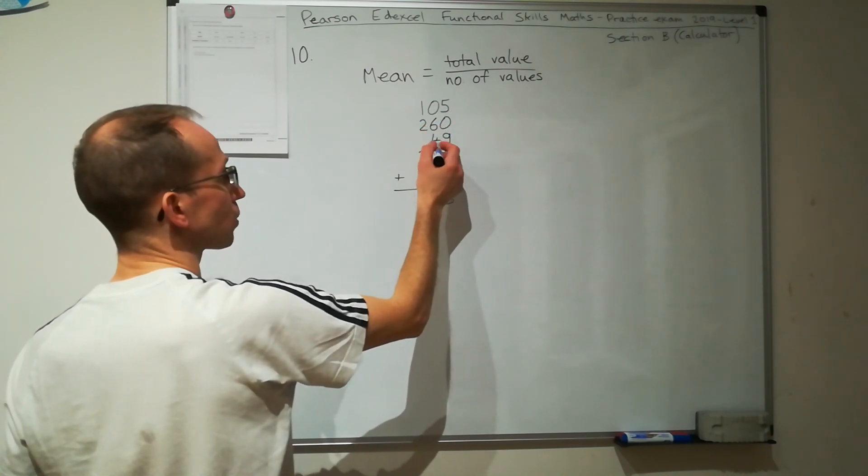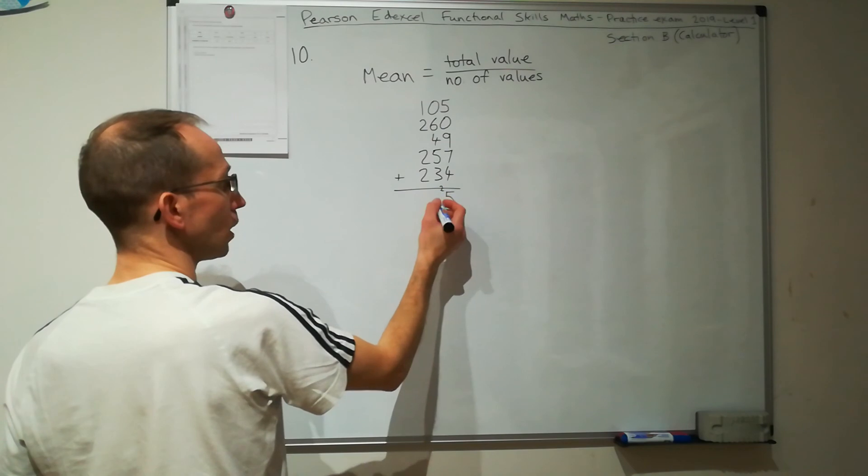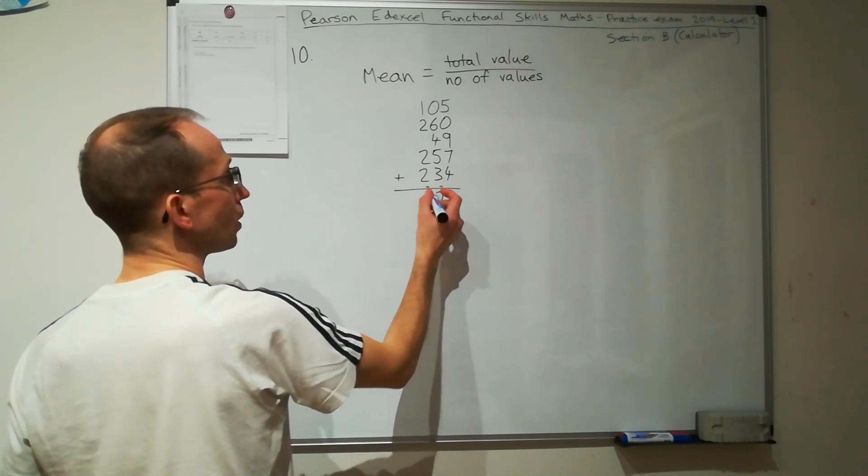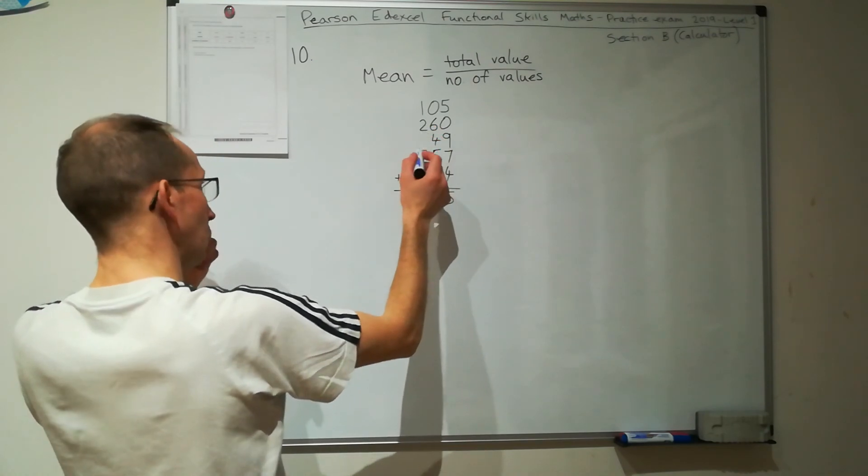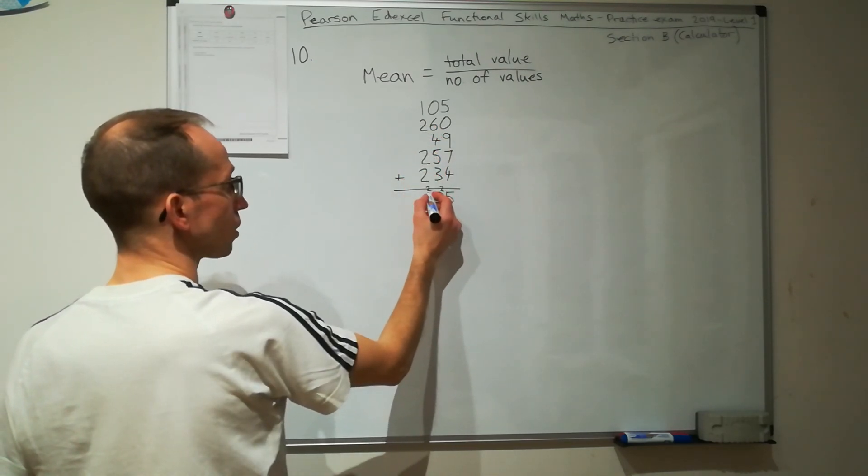0 plus 6 plus 4 is 10, plus 5 is 15, plus 3 is 18, plus 2 is 20, carry the 2. 1 plus 2, plus 2, plus 2 is 7, plus another 2 is 9.